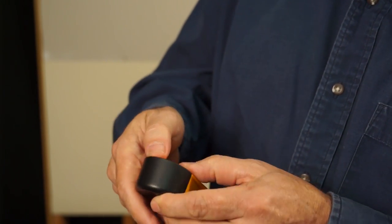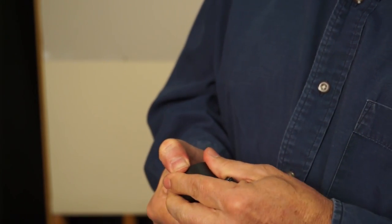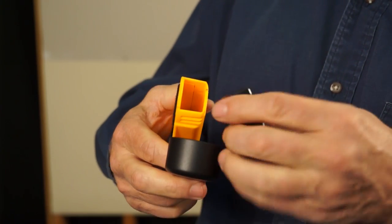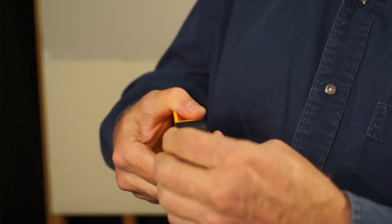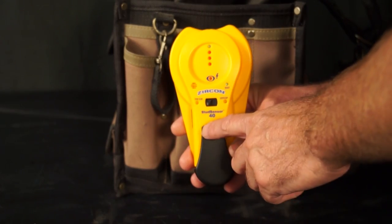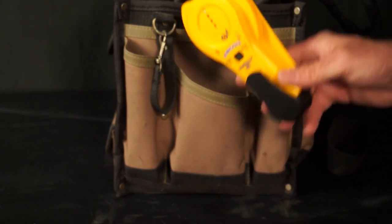Instead, go ahead and push down on the tab to loosen this belt clip, install your battery, and then replace the belt clip. The belt clip helps keep your StudSensor secure in between uses.